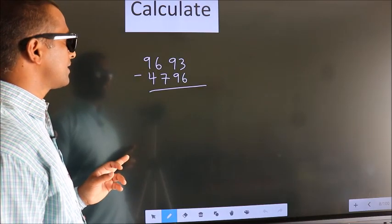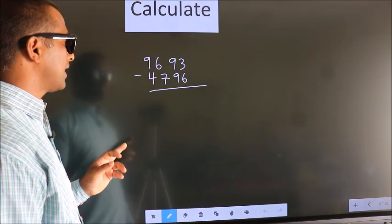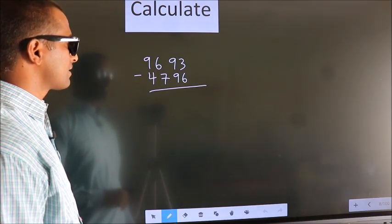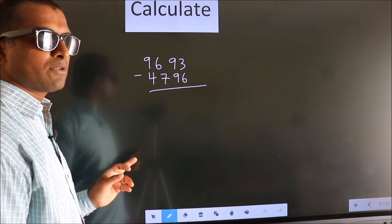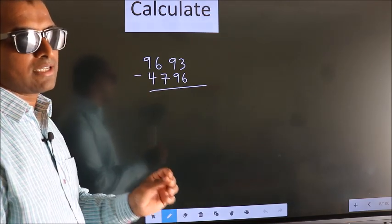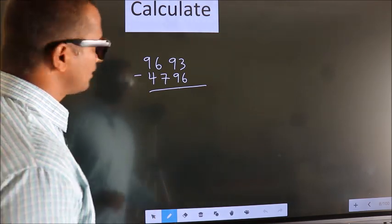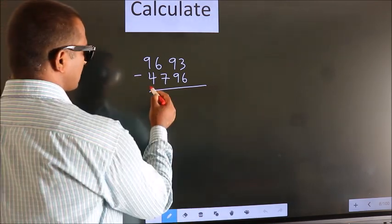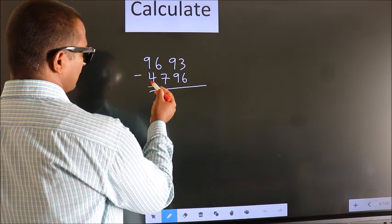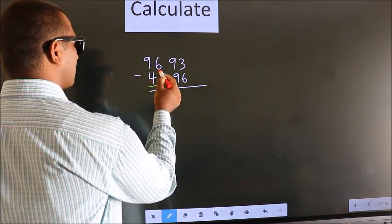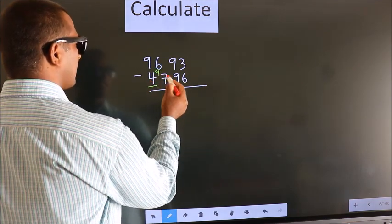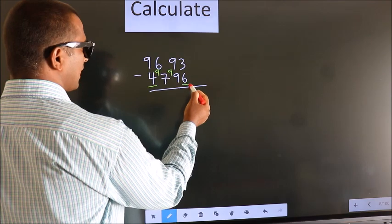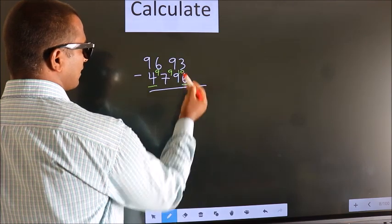Calculate 9693 minus 4796. How do we subtract faster? See, we should leave the first digit, and here we write 9, here 9, and for the last digit we write 10.